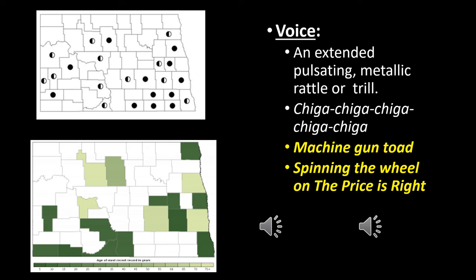Great plains toads can be locally abundant at times but tend not to be as easy to find, especially during the day since they're much more nocturnal than some other toads. Their call has a wider distribution than the American or Canadian toads. I call them the 'machine gun toad' — it sounds like a robotic machine gun, or like the spinning wheel on The Price Is Right: a rapid 'chicken chicken chicken chicken' call. They're often heard in the distance.